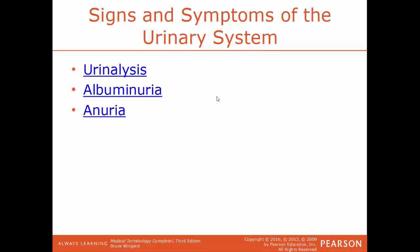Now we'll go over some particular signs and symptoms of the urinary system. Urinalysis is the analysis of urine by physical, chemical, or microscopic means, usually to test for drugs or disease. Albuminuria is the presence of albumin or protein in the urine. Anuria — breaking down the term: an means without, and urea means urination — so anuria means the failure of the kidneys to produce urine.